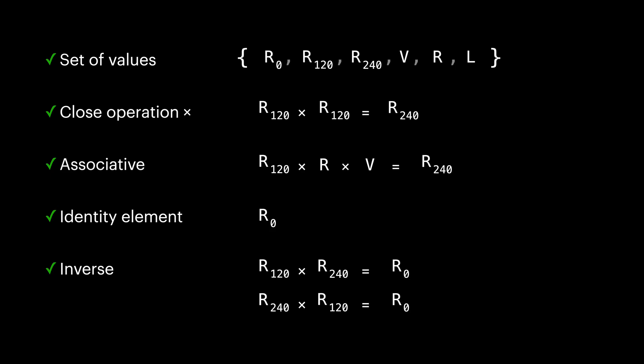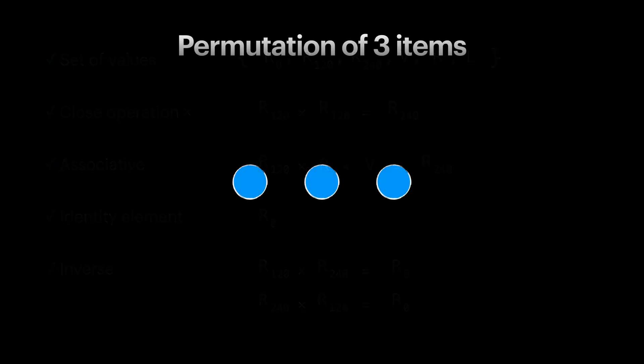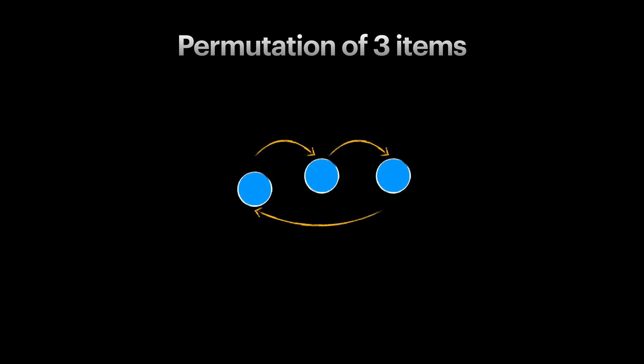Alright, let's take a look at another example. Let's imagine we have three items, like these three circles. What we are interested in is the permutation of these three circles. If we try to list all the permutations here, we end up with six distinct permutations. Each one places circles in a distinct position.